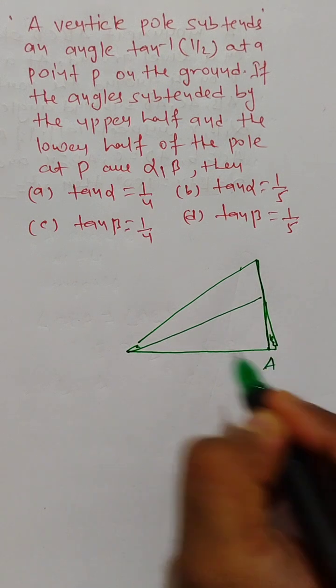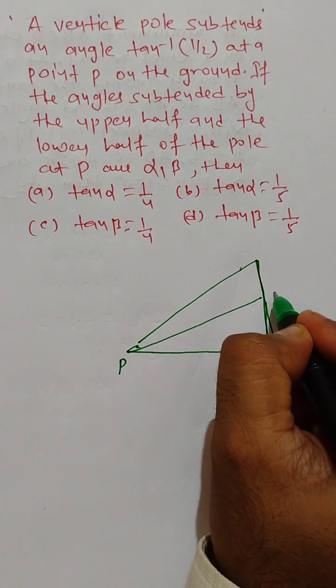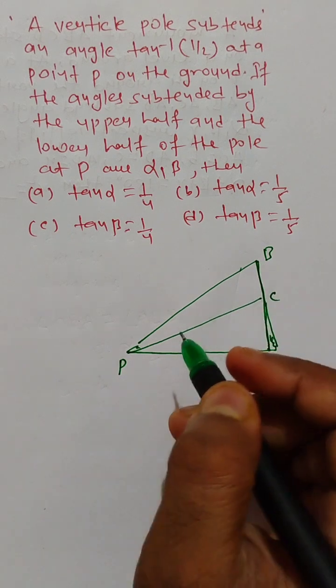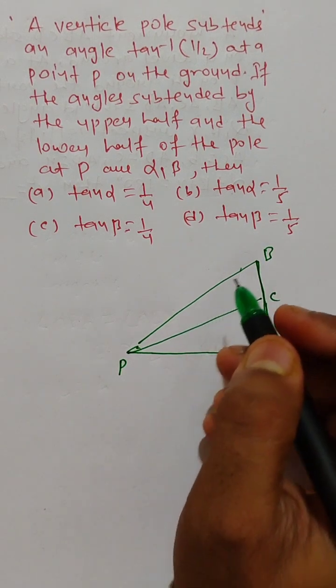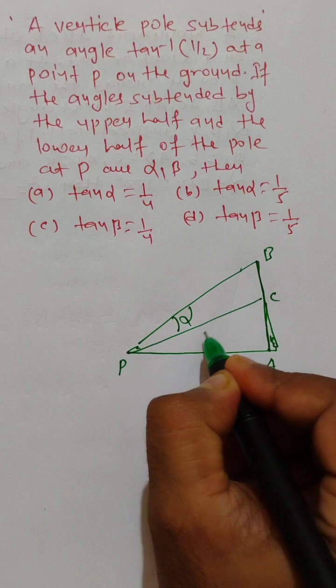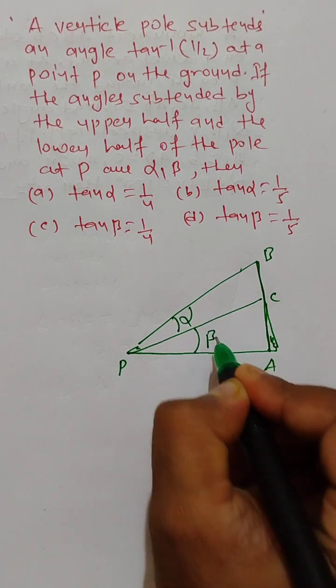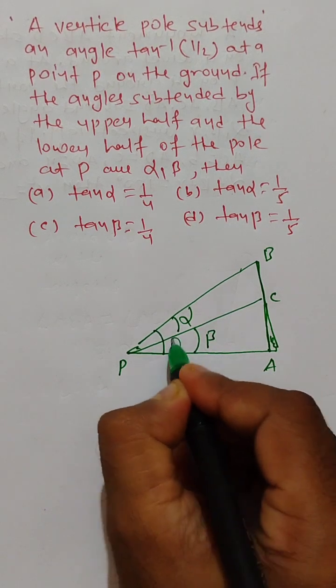This is point A, this is point B, and this is C. This angle is alpha, this angle is beta, and this angle is theta.